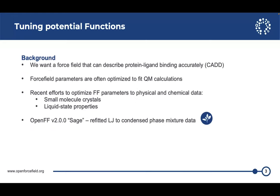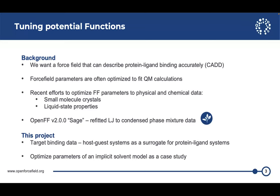Just a little background. We want a force field that can describe protein ligand binding accurately. This is the holy grail in the application of computer aided drug design. Most force fields are fitted to QM data, especially for the valence parameters, but there's been recent efforts to optimize them to physical data directly. For example, small molecule crystals and liquid state properties. OpenFF v2.0.0 Sage refitted LJ to condensed phase mixture data. So for this project, the question is why don't we target binding data directly? The aim is to target host guest binding instead of protein ligand. We use host guest system as a surrogate for protein ligand systems. And as a case study we'll optimize an implicit solvent model.